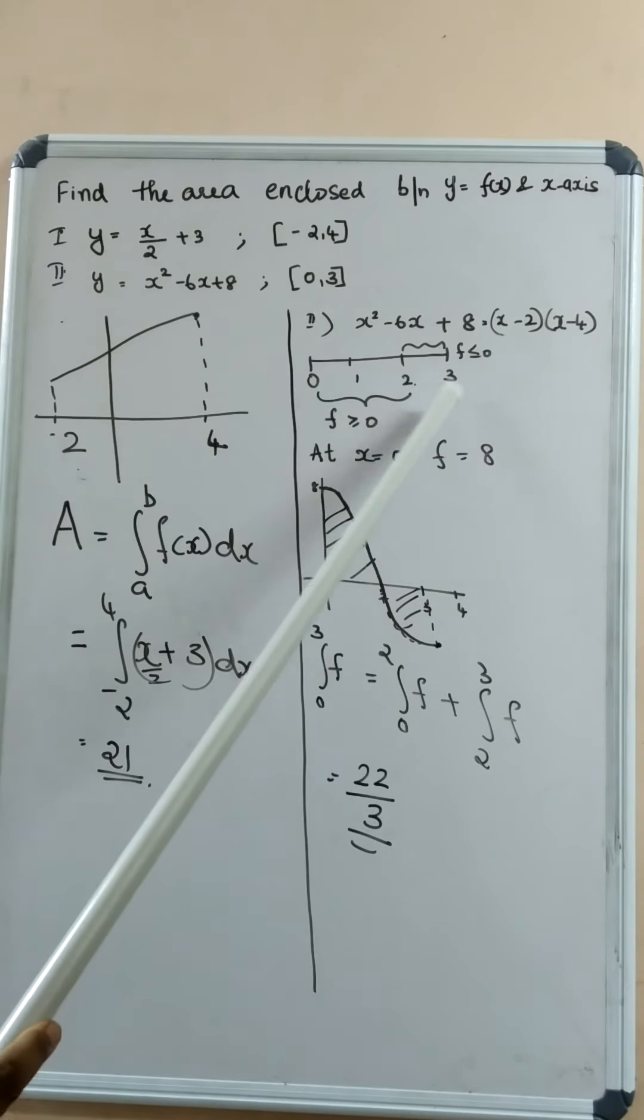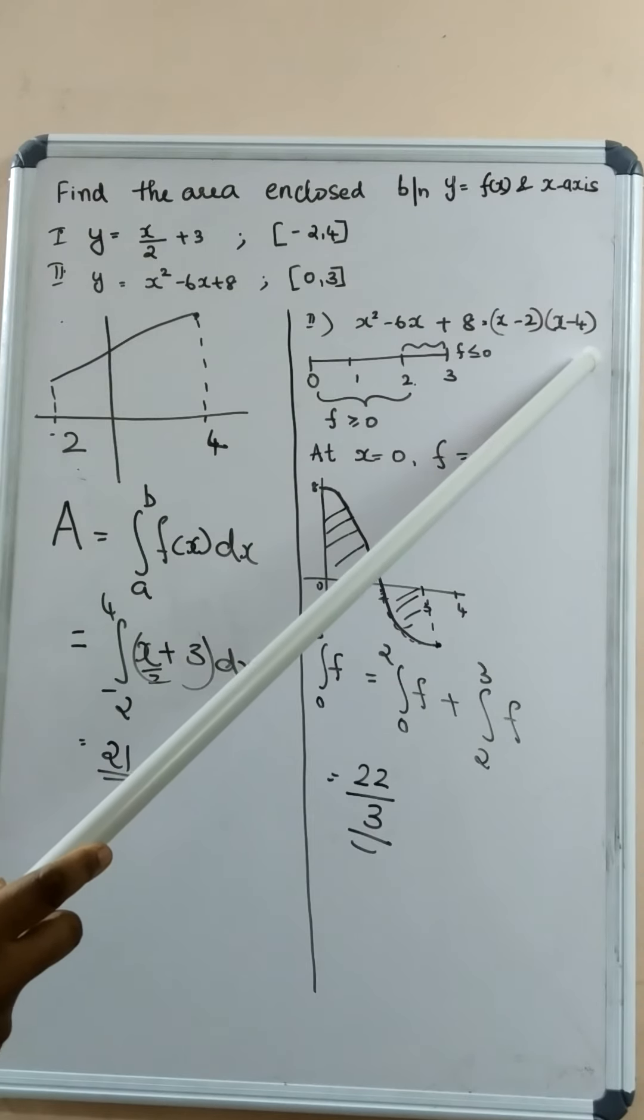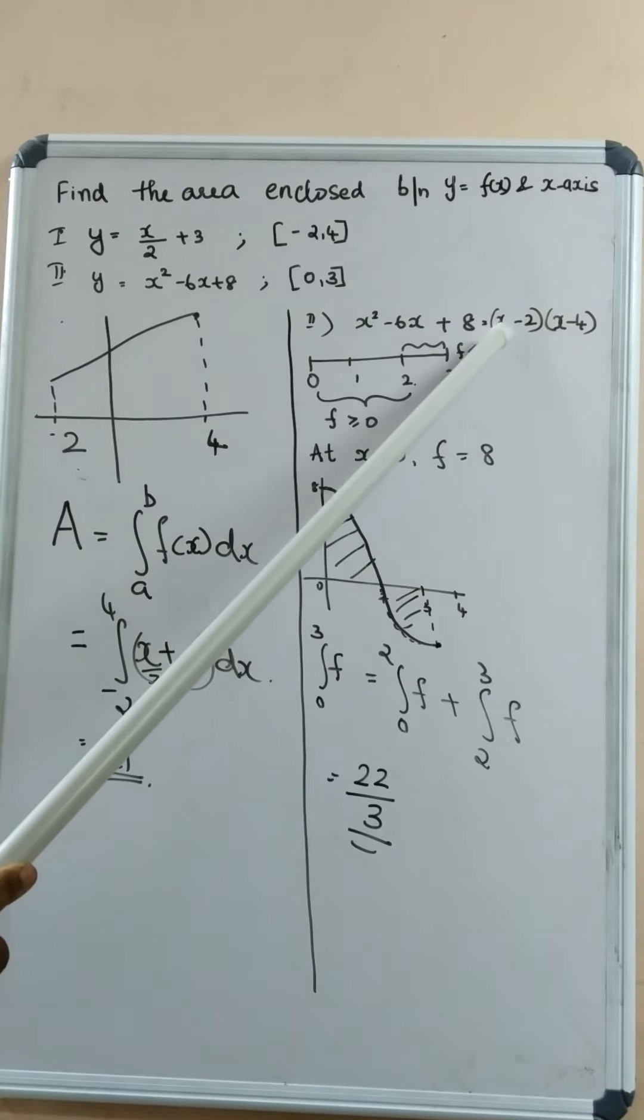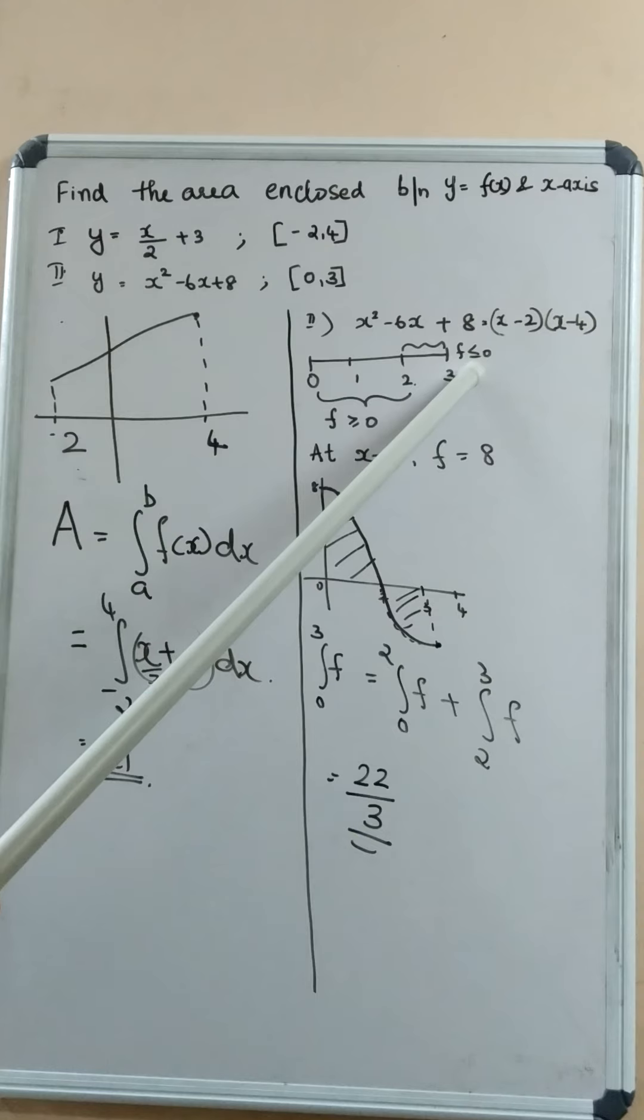In the interval 2 to 3, the factor x minus 2 is positive. But this factor x minus 4 is negative. The product of a positive factor into negative is negative.